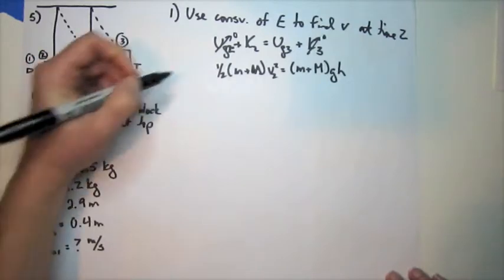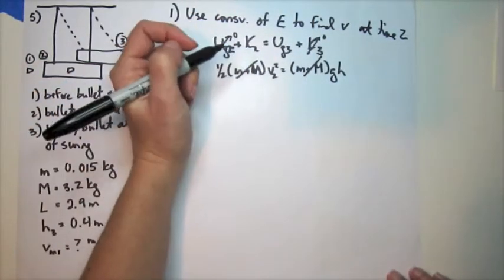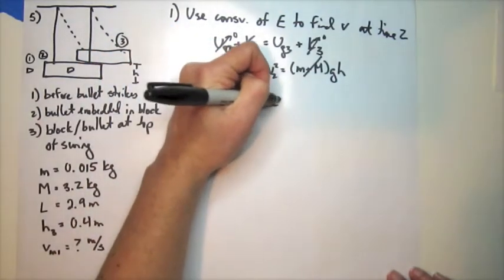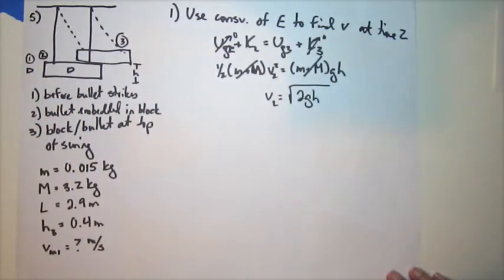This. So the masses cancel out. And so we can figure out the velocity at time 2. square root of 2gh.